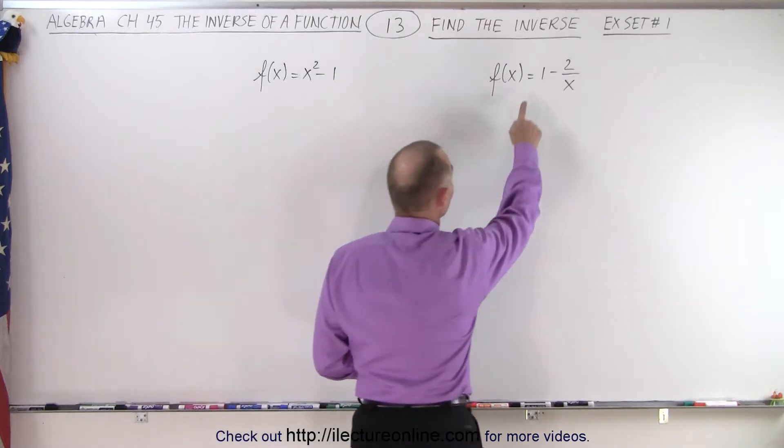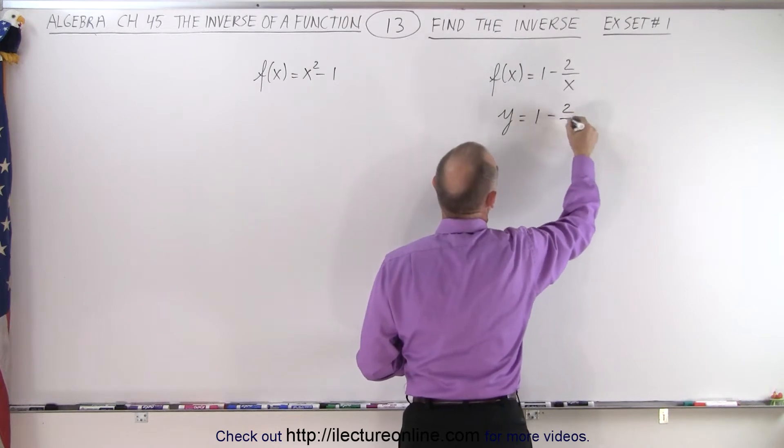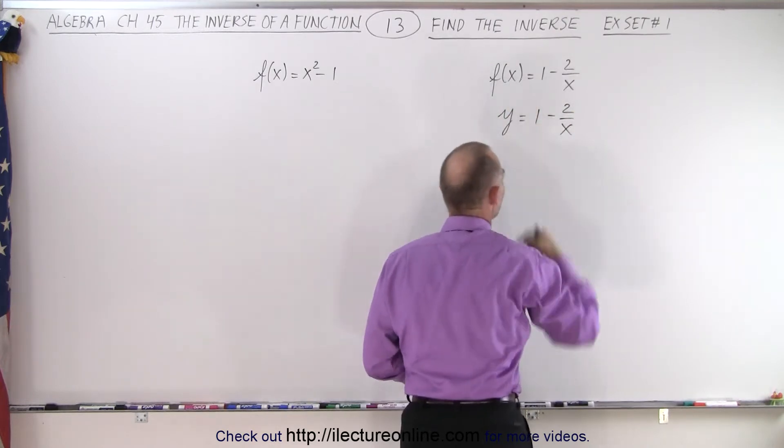First, what we take, we take the function and write it in the form y equals 1 minus 2 over x. So we replace f of x by y.